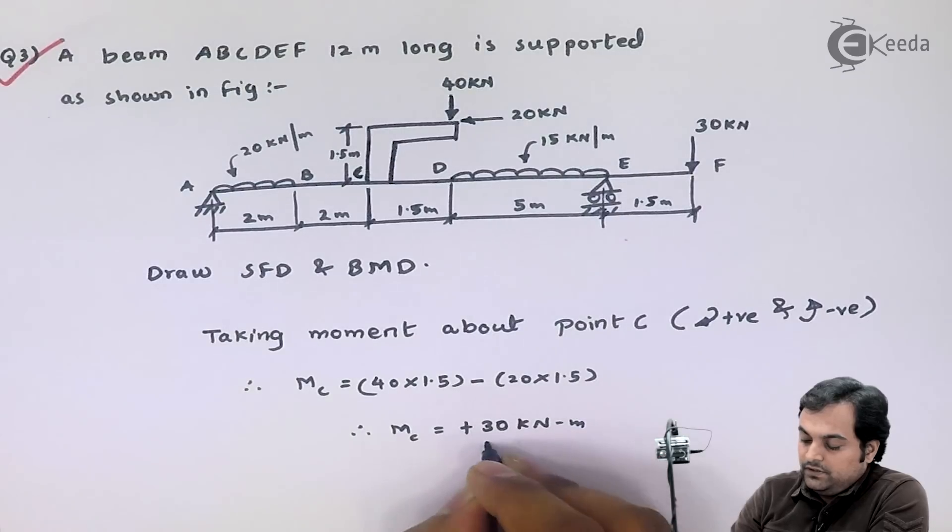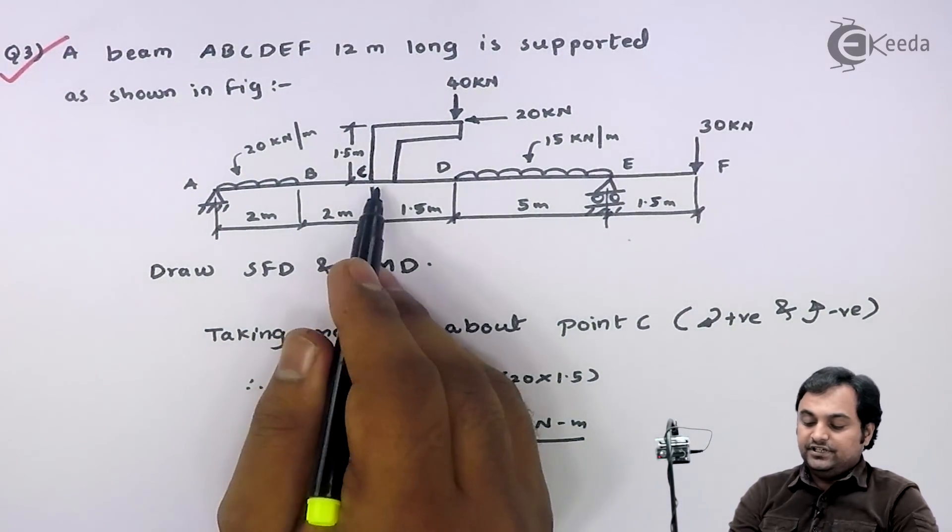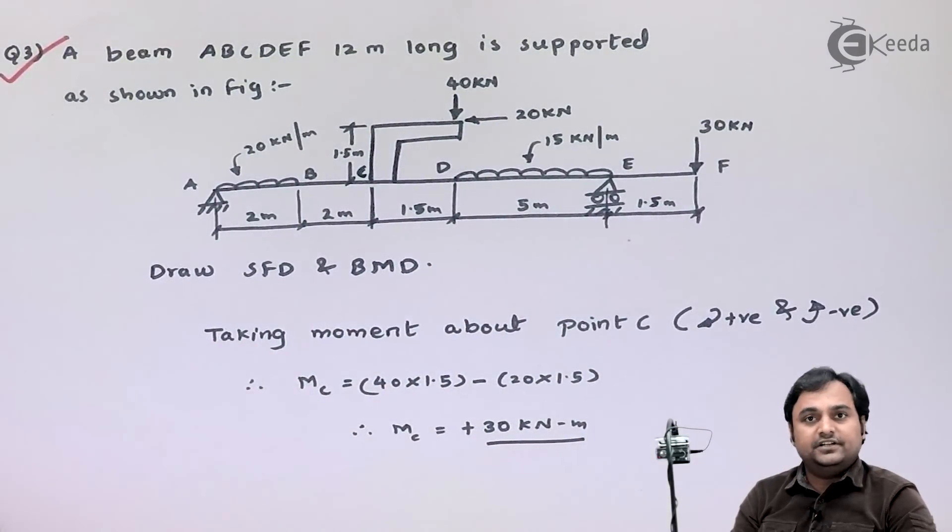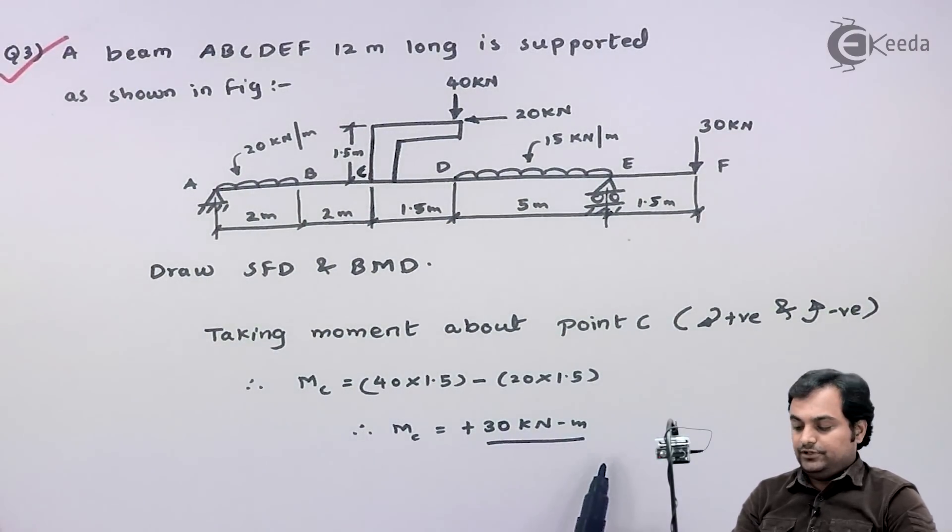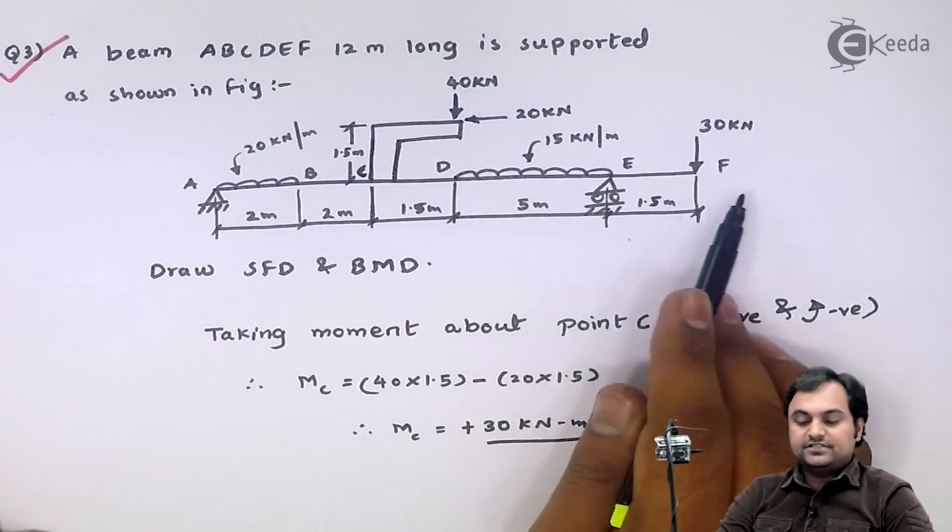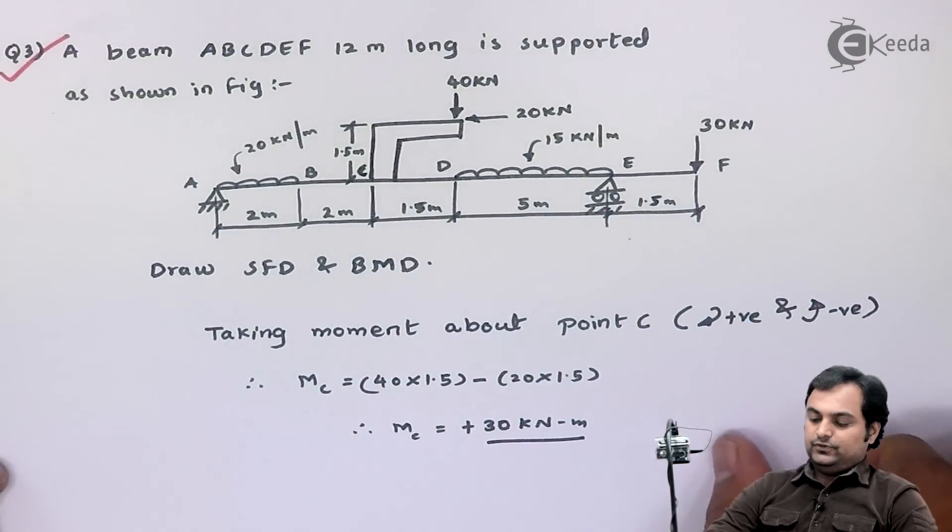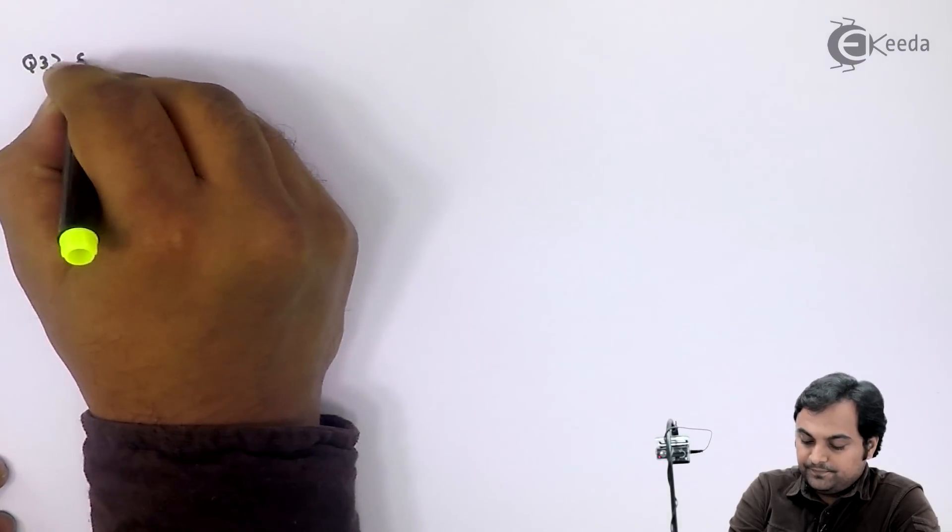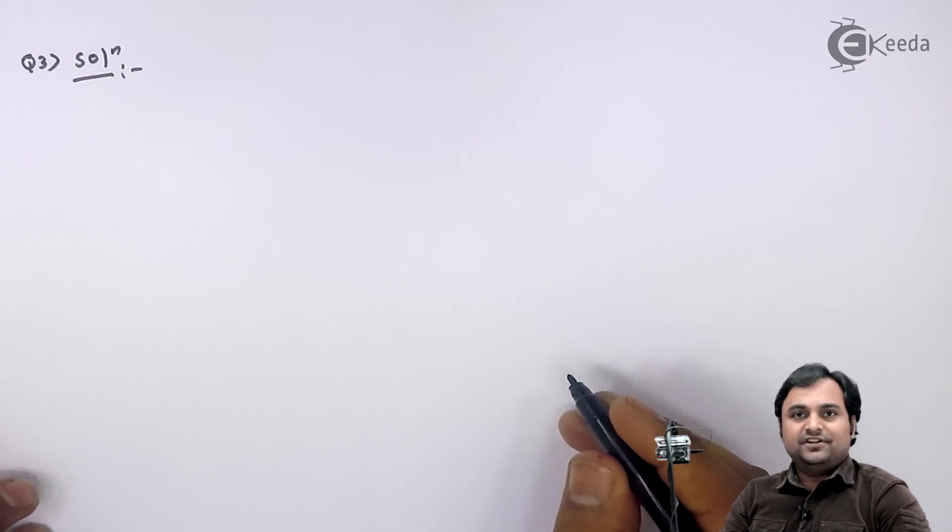Now since my answer is positive, it means at point C there is a moment acting because of this bracket given in the diagram, and that value of moment is 30 kilonewton meter. For that I'll draw this beam again and show this value of moment, or you can say couple. So let's start solving question number three.